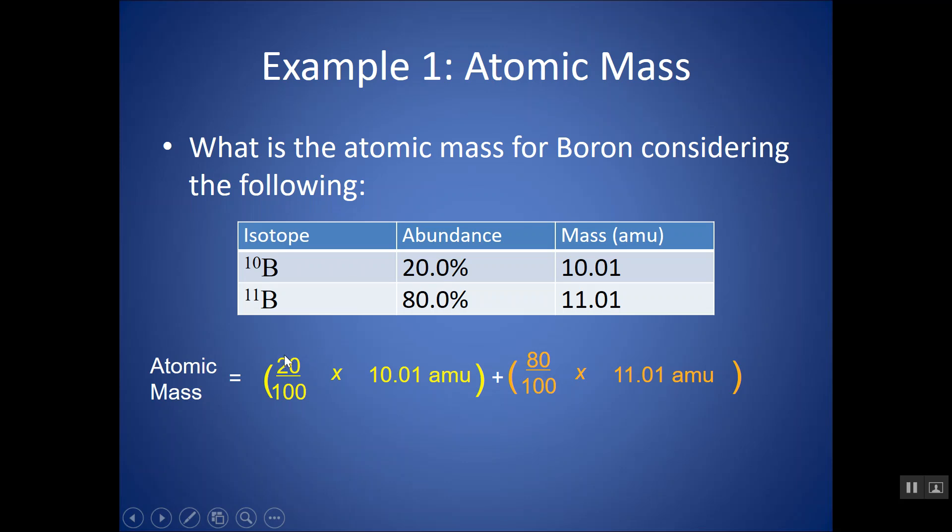So atomic mass is equal to the percent abundance over 100 times the mass for each of these isotopes. So here's my first isotope, percent abundance is 20 over 100 to essentially turn it into a decimal, or you might just write 0.2, times the mass is 10.01. And then do the same thing for the second one, percent abundance over 100 times the mass. And notice I'm putting them in parentheses. And then, if you want to do this in each step, you can do it all in one step in your calculator if you want.